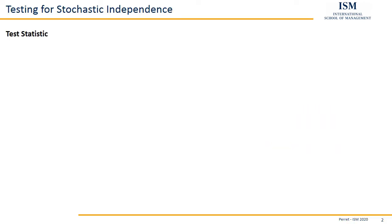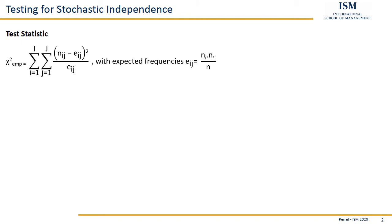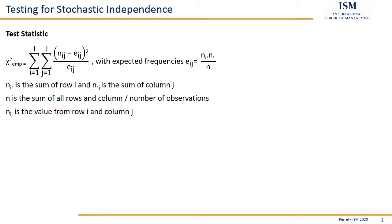Basically the first idea is getting our test statistic — that's mostly the same with all the tests. The test statistic here is the chi-squared statistic. So we consider our original values, that's the N_IJ — the values from our original table, the original frequencies.